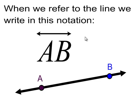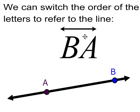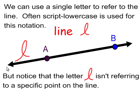This is the correct notation: capital letters, only two letters. You can switch the order, make it B, A, that works. If you put a script lowercase letter alongside the line, that lowercase letter will not indicate any specific point on that line, but we could refer to that as line L. When we talk about lines, like line L or line AB, we're talking about infinitely many points that extend between A and B and beyond.